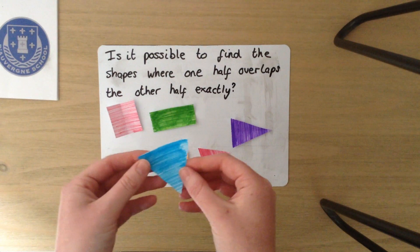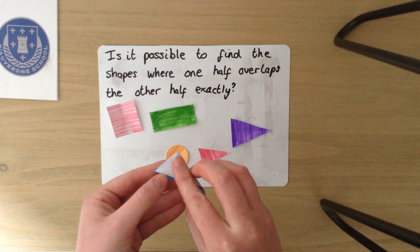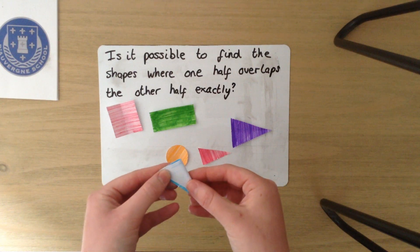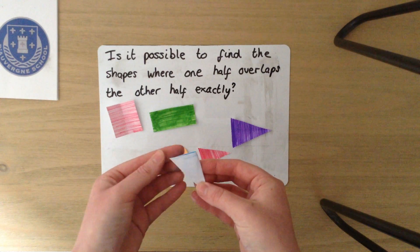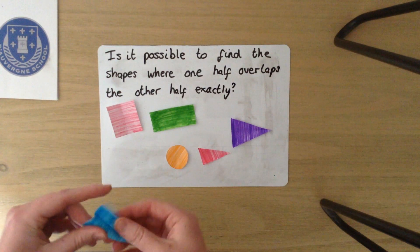Let's try another triangle. Can we fold over where one half overlaps the other exactly? That's folded over. That one we can do it with.